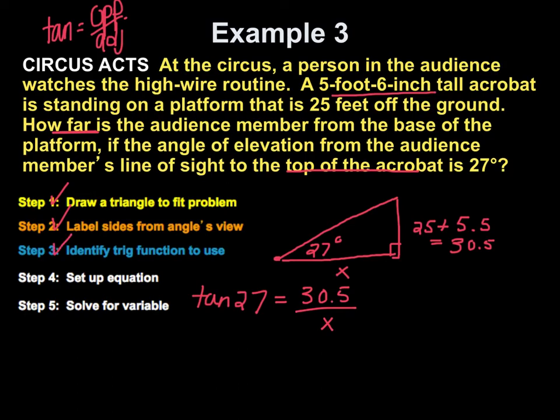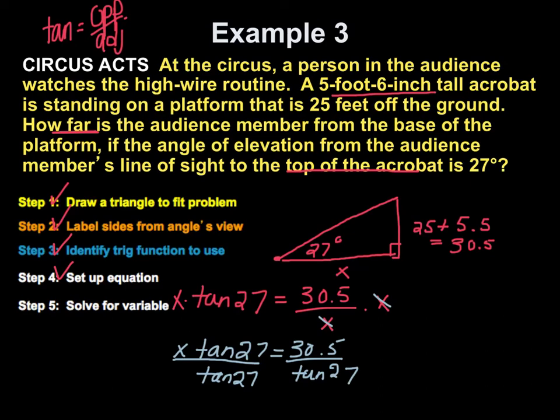Now, to solve for the x, I'm going to multiply both sides by x. And on the right hand side now, my x's are going to cancel. So, I have x times the tangent of 27 is equal to 30.5. And now, to further solve for x, I actually have to divide both sides by the tangent of 27.